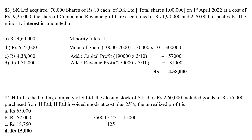MCQ 84: H Limited is the holding company of S Limited. The closing stock of S Limited is Rs.2,60,000, which includes goods of Rs.75,000 purchased from H Limited. H Limited invoices goods at cost plus 25 percent. Formula: Rs.75,000 × 25 ÷ 125 = Rs.15,000. The unrealized profit is Rs.15,000.